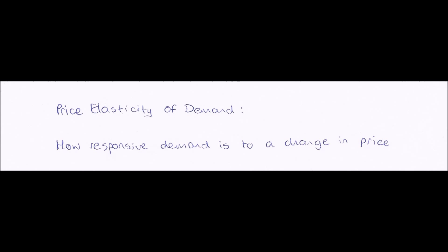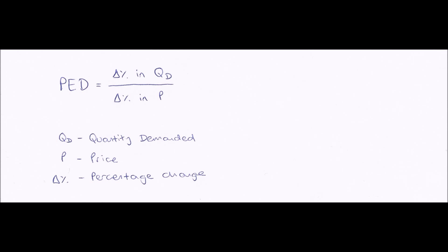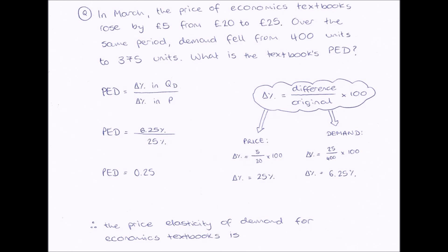So price elasticity of demand is how responsive demand is to a change in price. PED can either be elastic, where there is a large change in demand when there is a change in price, or inelastic, when there is very little change in demand when there is a change in price. We can work out price elasticity of demand mathematically using this formula: PED equals percentage change in quantity demanded divided by percentage change in price.